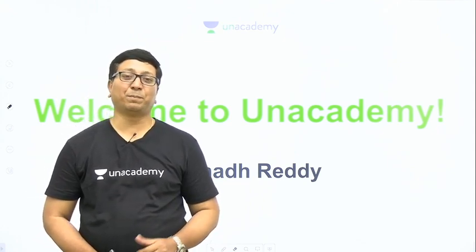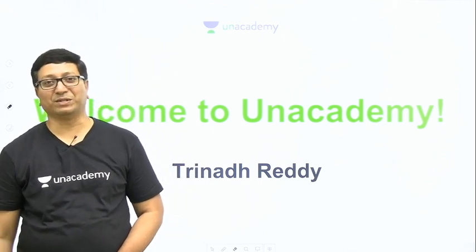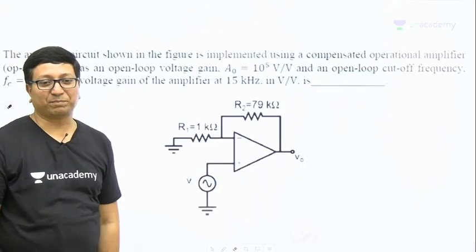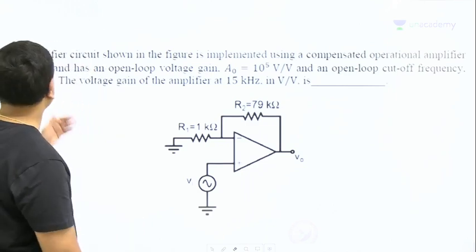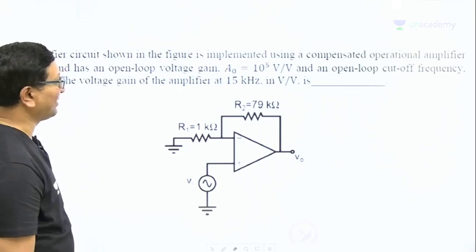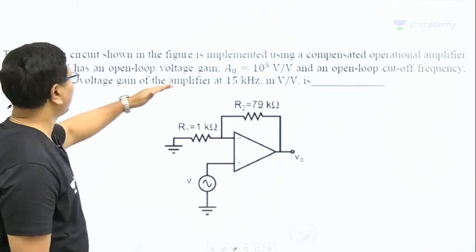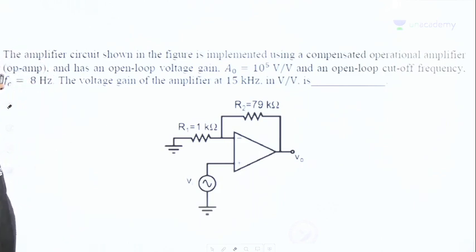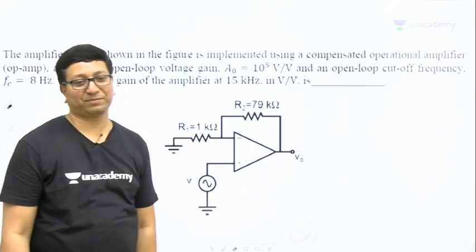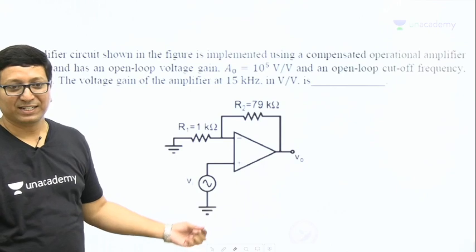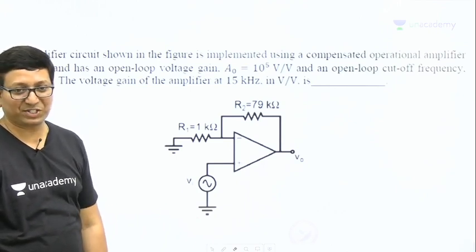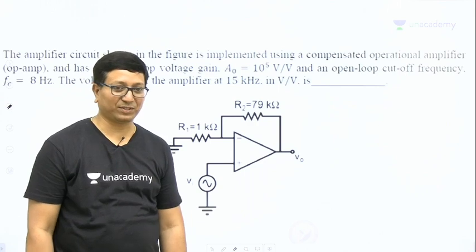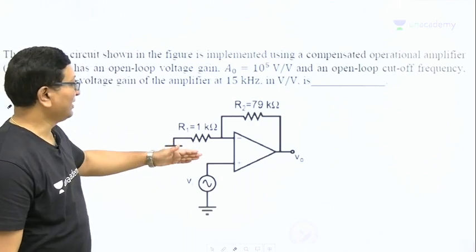Let us have a look at that question. This is a question asked in previous GATE papers of electronics branch. The amplifier circuit shown in the figure is implemented using a compensated operational amplifier and has an open-loop gain of 10^5 and an open-loop cutoff frequency fc = 8 Hz. The voltage gain of the amplifier at 15 kHz is what? An op-amp with open-loop configuration gain and cutoff frequency are mentioned. They are asking to find the gain at a frequency of 15 kHz. How to solve this question?